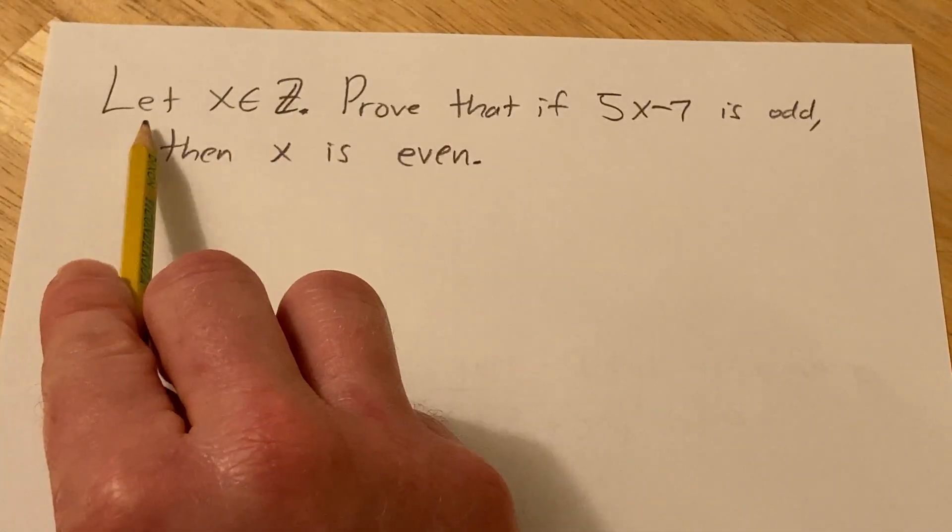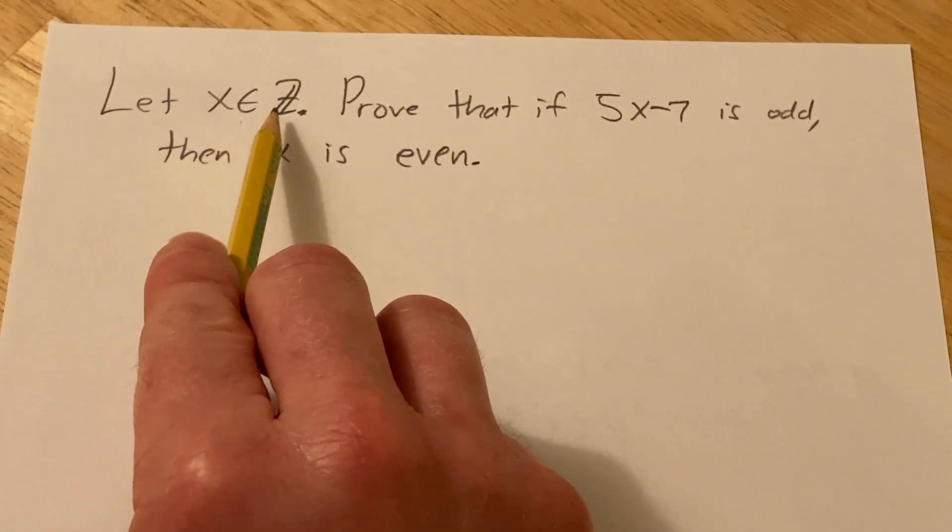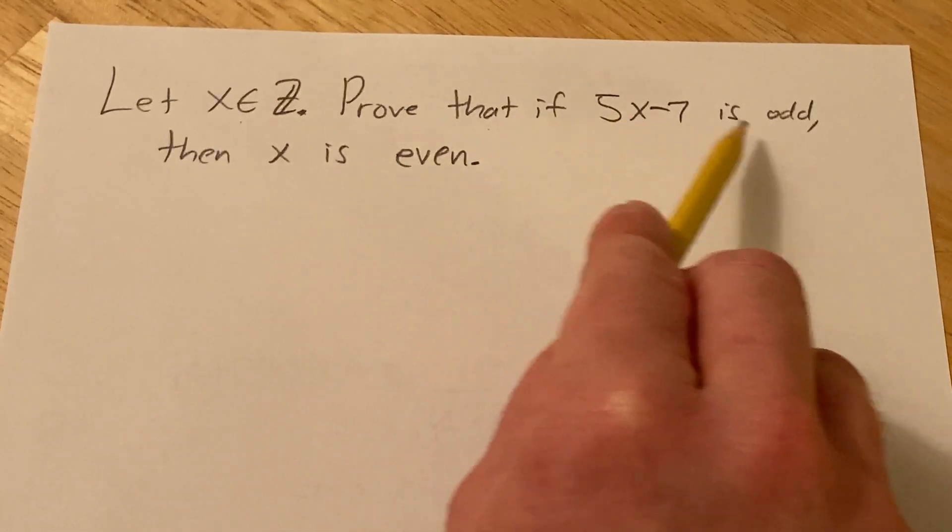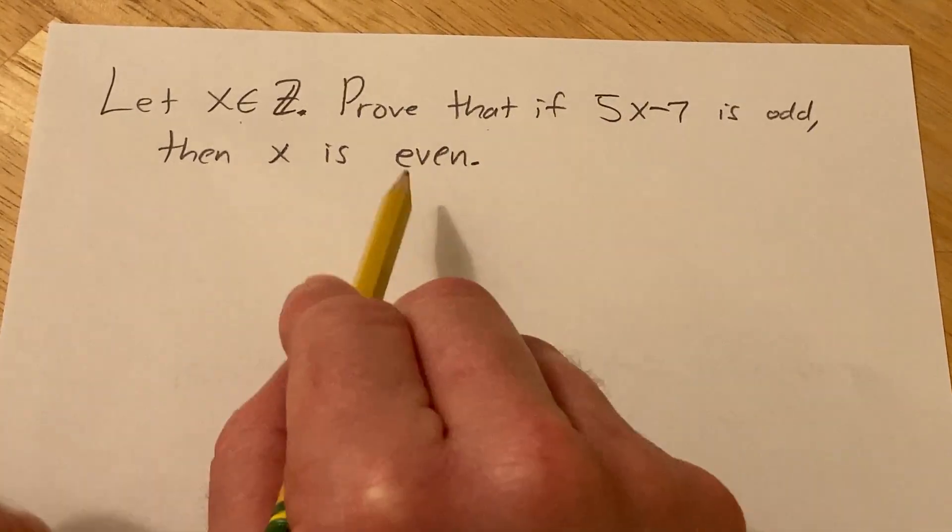Hi, in this video we're going to do a proof. So let x be an element in the set of integers. You have to prove that if 5x minus 7 is odd, then x is even.